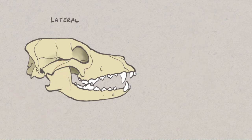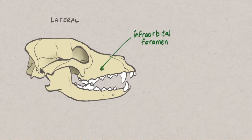Knowledge of where branches of the trigeminal nerve exit the skull can be used to perform local anaesthetic nerve blocks for dental procedures. The infraorbital foramen in the maxilla and the middle mental foramen are useful sites to palpate for these techniques.